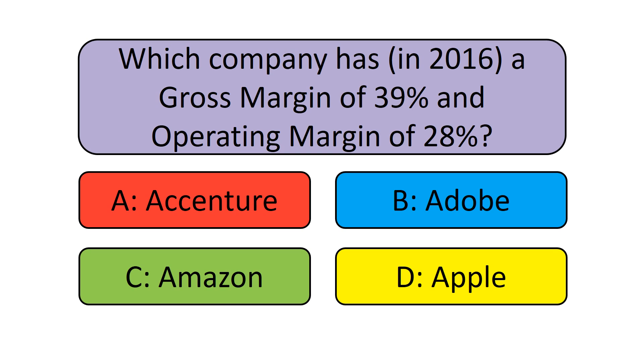You will see in this video that the Gross Margin of these four companies ranges from 31% to 86%, and the Operating Margin of these four companies ranges from 3% to 28%.